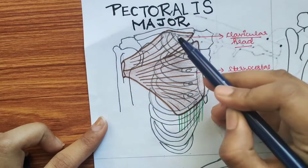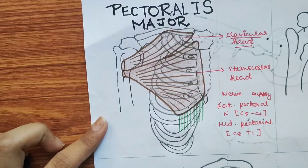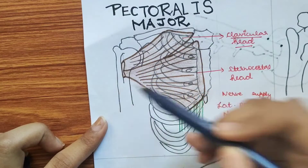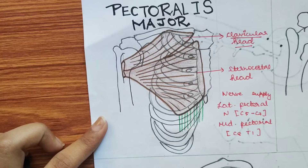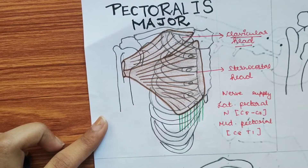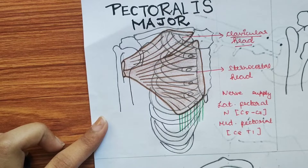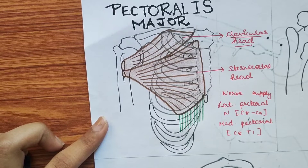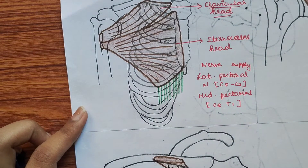Both heads move backwards and get inserted onto the lateral lip of the bicipital groove. A useful mnemonic is 'lady between the two majors': the lady is latissimus dorsi, inserted into the bicipital groove, and the two majors are pectoralis major (lateral lip) and teres major (medial lip).